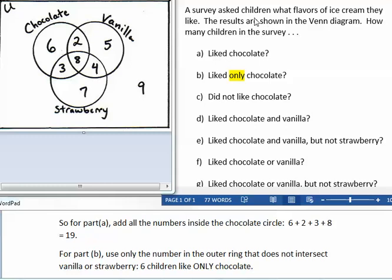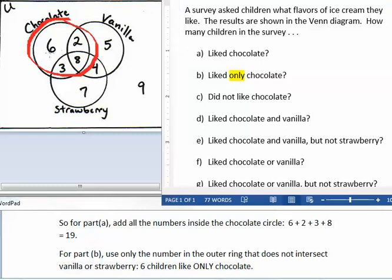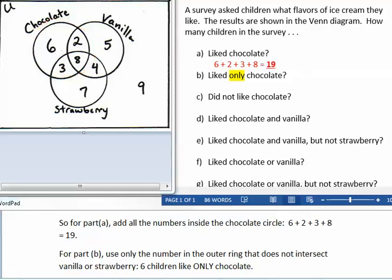So for part A, add all the numbers inside the chocolate circle. 6 plus 2 plus 3 plus 8, and that equals 19. For part B, only chocolate, use only the number in the outer ring that does not intersect vanilla or strawberry. 6 children like only chocolate.